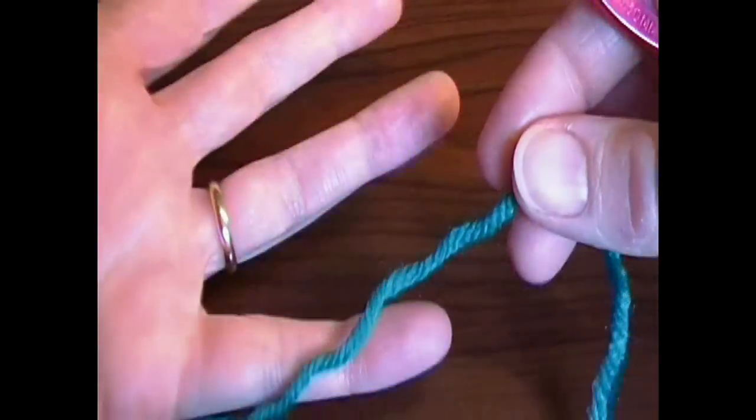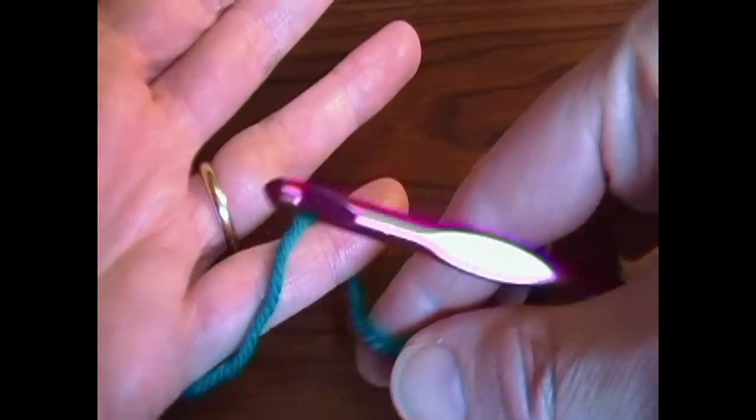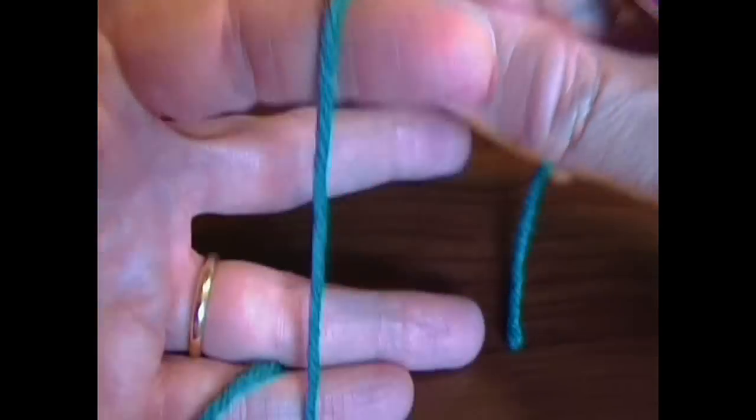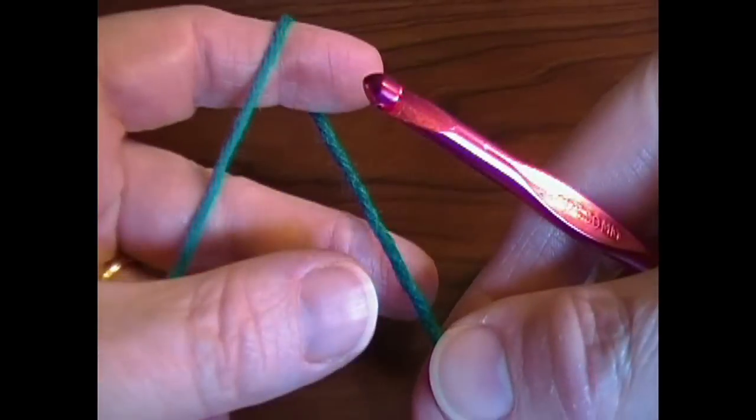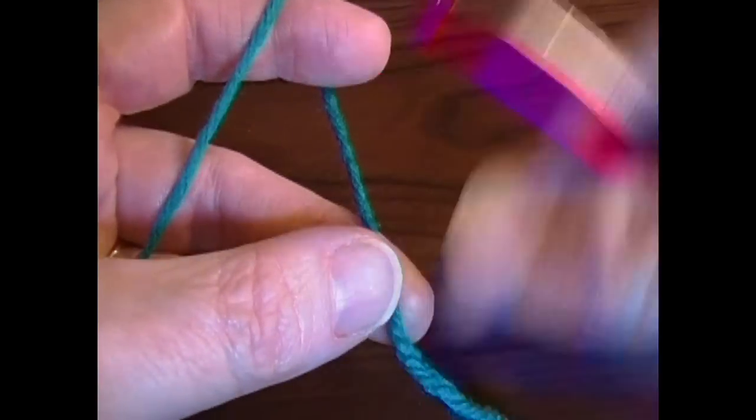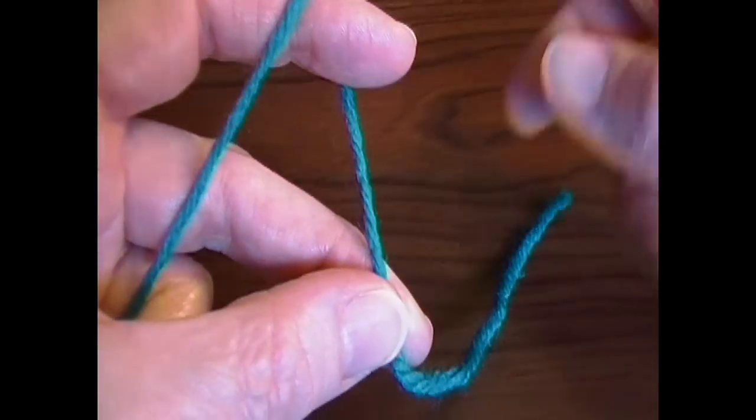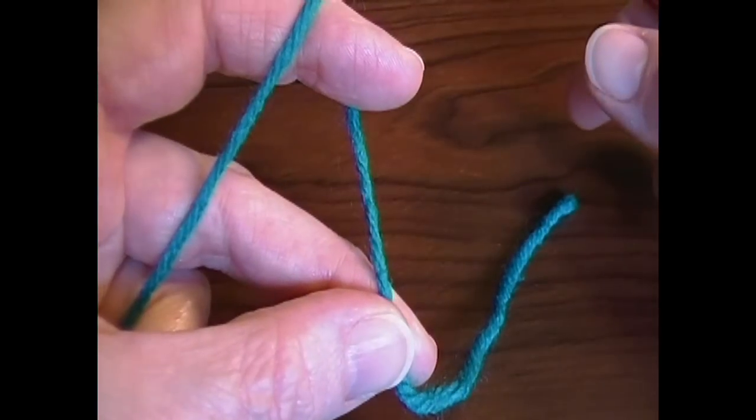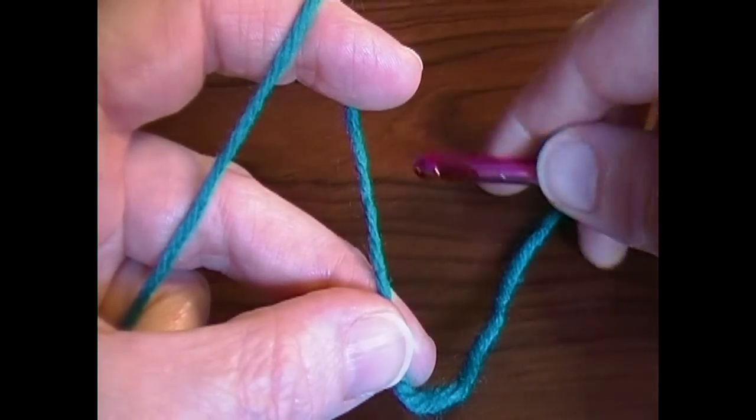To start with you need to learn your tension. The way I do my tension is I wrap it around my pinky, around my pointer, and then I hold the tail between my thumb and my middle finger.